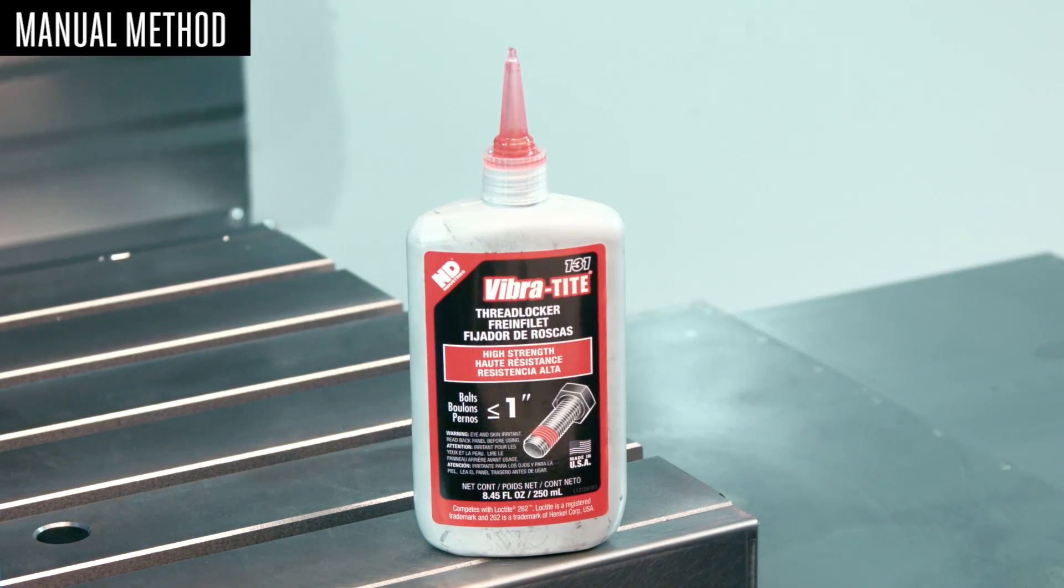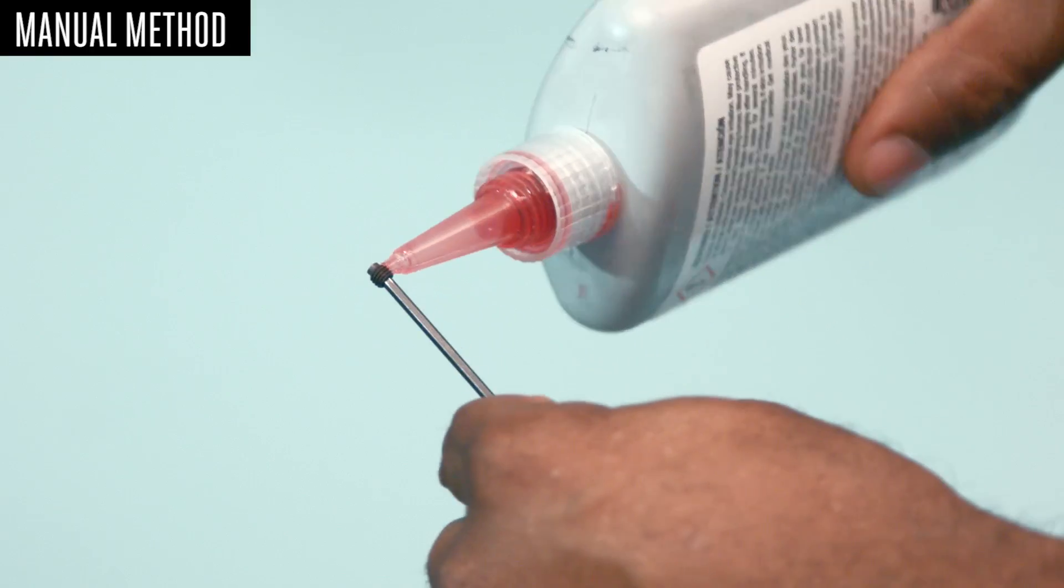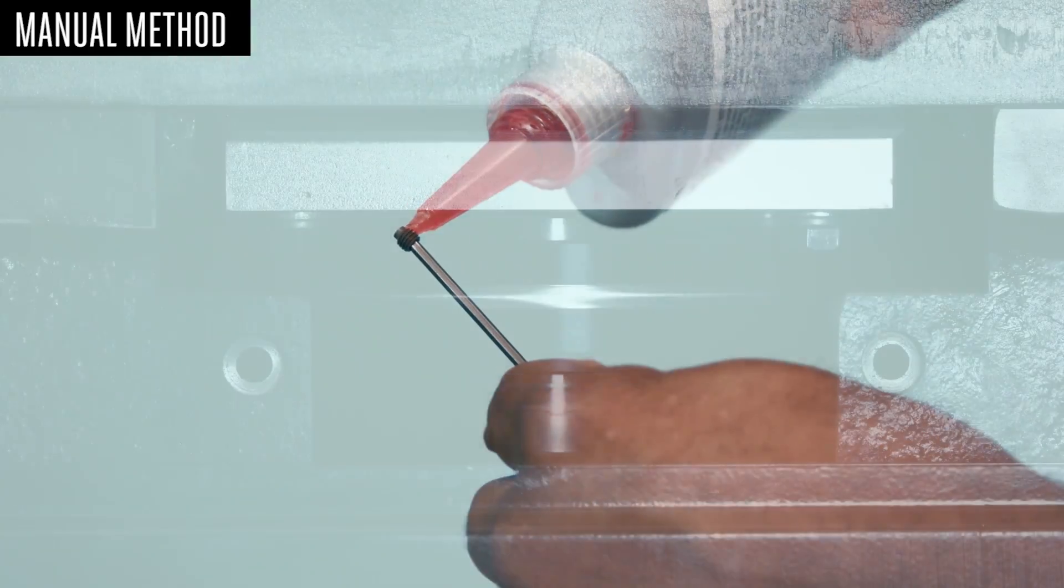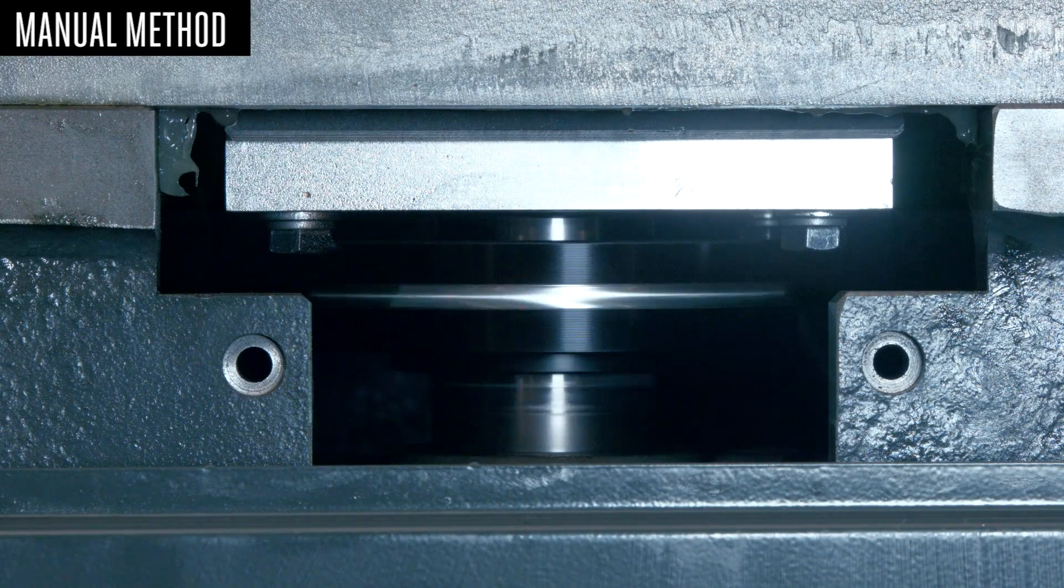When you're satisfied with the result, remove the set screws that you've installed and apply a drop of Loctite to each one. Reinstall them and run the test again.